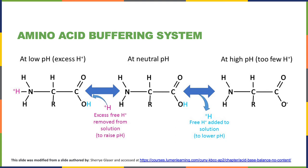When an acid or base is introduced into the solution, one of the pH buffering systems in the body is the amino acid buffering system, shown in the illustration here. Amino acids can accept hydrogen ions from solution in order to prevent a decrease in blood pH.